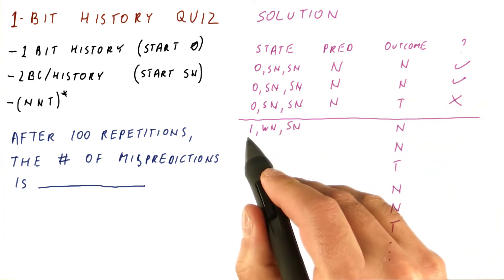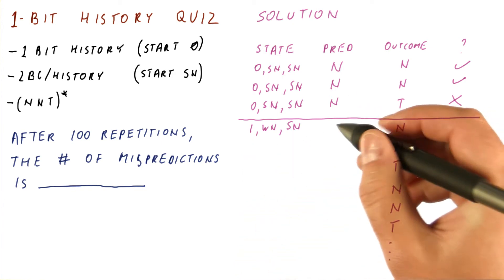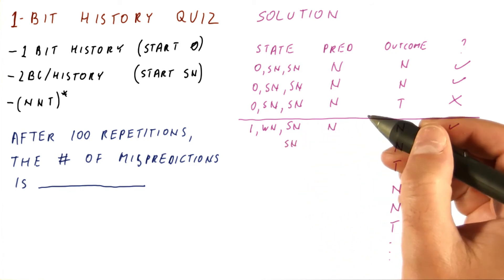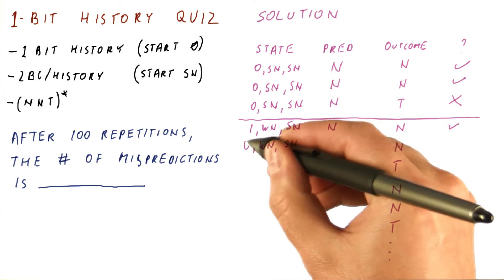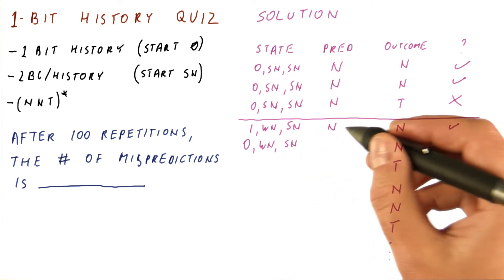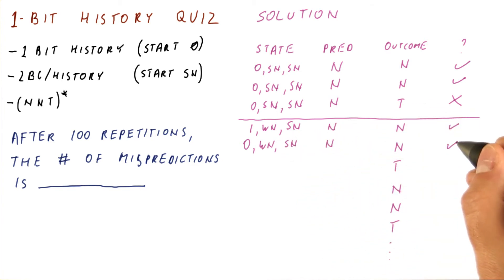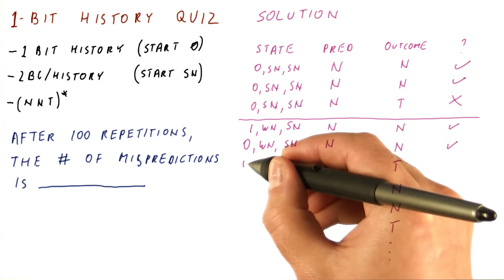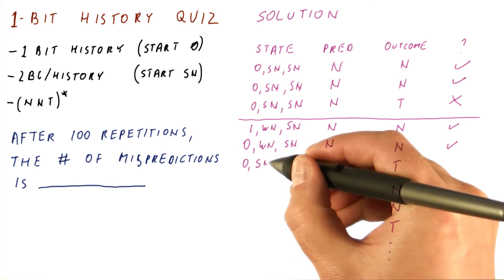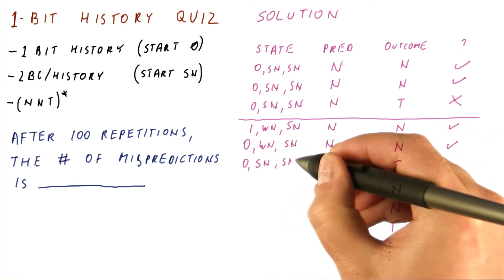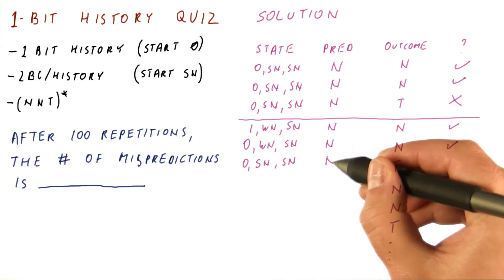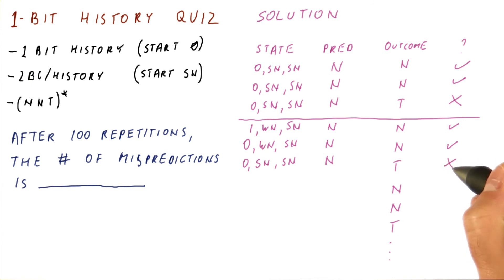Now we use a history of one to index, giving strong not taken, so the prediction is not taken and is correct. The strong not taken counter stays the same, and the history becomes zero. We use history zero to index into the weak not taken state, predicting not taken again — correct. The history stays zero, and the weak not taken updates back to strong not taken because the outcome was not taken. Using history of zero again, this counter says strong not taken, so we predict not taken. This disagrees with the taken outcome, so we have a misprediction.